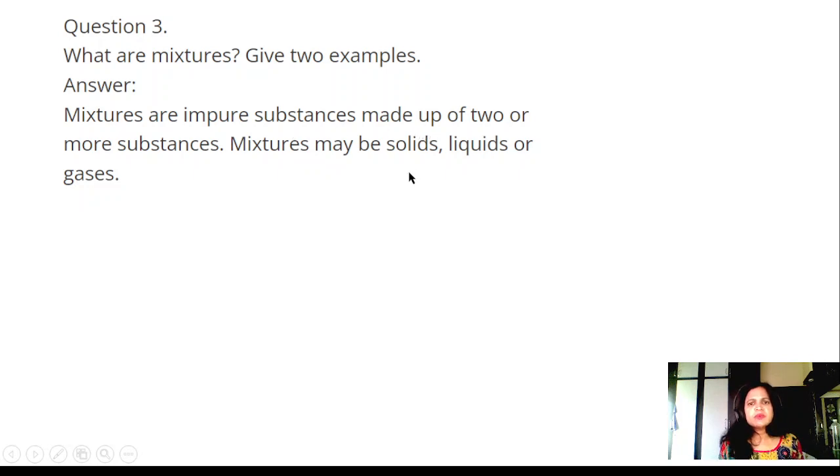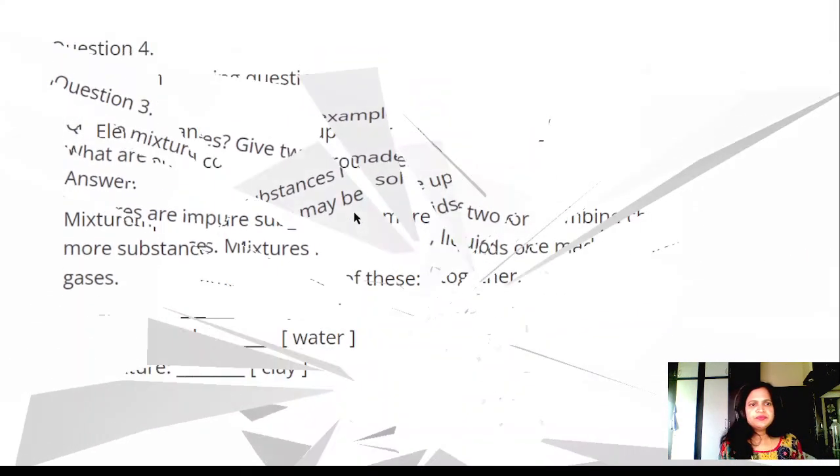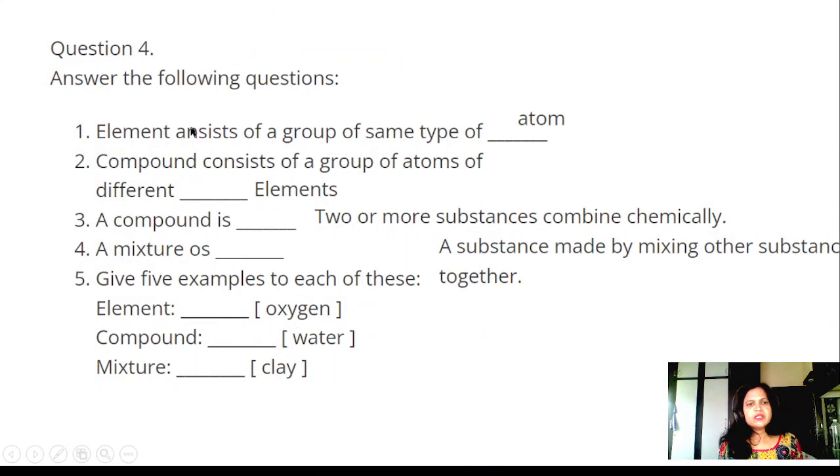Answer the following questions. Elements consist of a group of the same type of atoms. Compounds consist of a group of atoms of different elements. A compound is two or more substances combined chemically. A mixture is a substance made by mixing other substances.